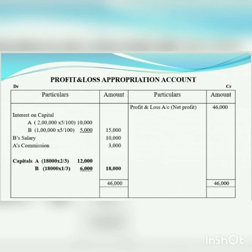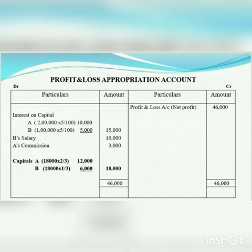Next, interest on capital: for A — 2,00,000 into 5% by 100 equals rupees 10,000. For B — 1,00,000 into 5% by 100 equals rupees 5,000. Total interest on capital is rupees 15,000. Next, A's commission: rupees 3,000. Total debit side so far: salary rupees 10,000 plus interest on capital rupees 15,000 plus commission rupees 3,000 equals rupees 28,000.